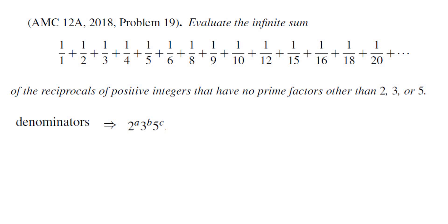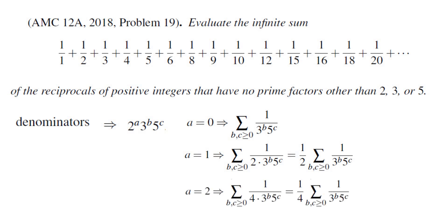Let's take different values of A in the denominator. Let's say A is 0. If A is 0 then we have the sum of all of the numbers of the form 1 over 3 to the B times 5 to the C. If A is 1 we have sum 1 over 2 times 3 to the B times 5 to the C. Of course we can factor 1 half and we get the same sum as the case of A equals 0 except with a factor of 1 half. When A is 2 we get again the same sum as in A equals 0 except for a factor of 1 fourth.